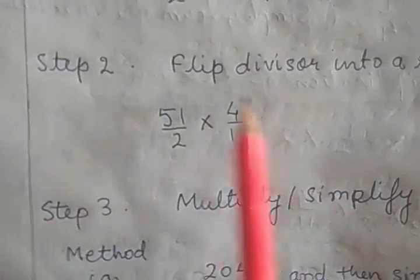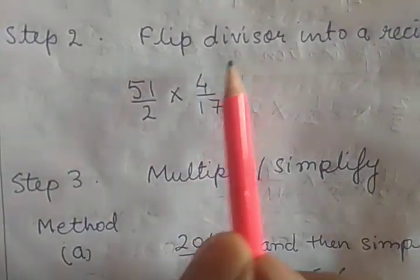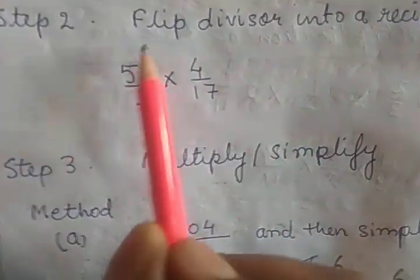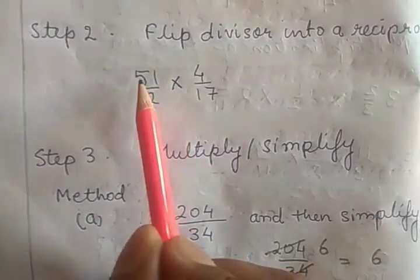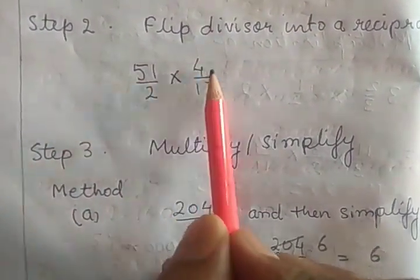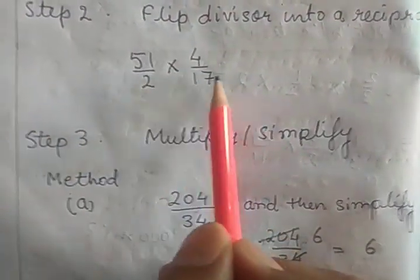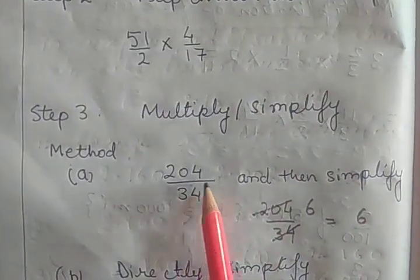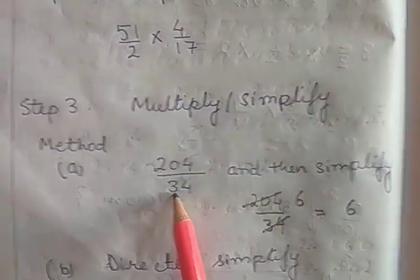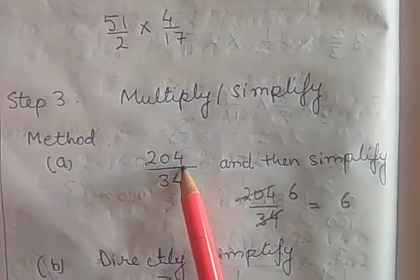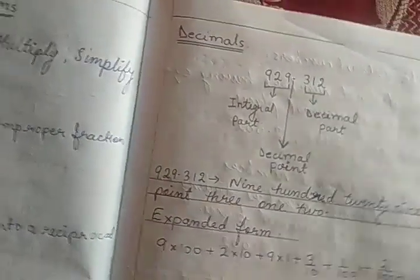After flipping, multiply and then simplify. You can directly simplify: 2 into 2, 17 into 3, 3 into 2 is 6. Or multiply first to get 51 into 4, which is 204 upon 34, then cancel with 6 — since 34 into 6 is 204. Both ways give the same answer; use whichever is convenient.